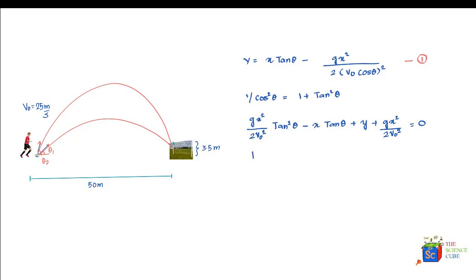If we write k as gx squared upon 2v naught squared and substitute x equals 50 meters, v naught equals 25 meters per second, and g equals 9.8 meters per second squared, we get k equals 19.6. Let's call this equation 2, which is another form of equation 1.